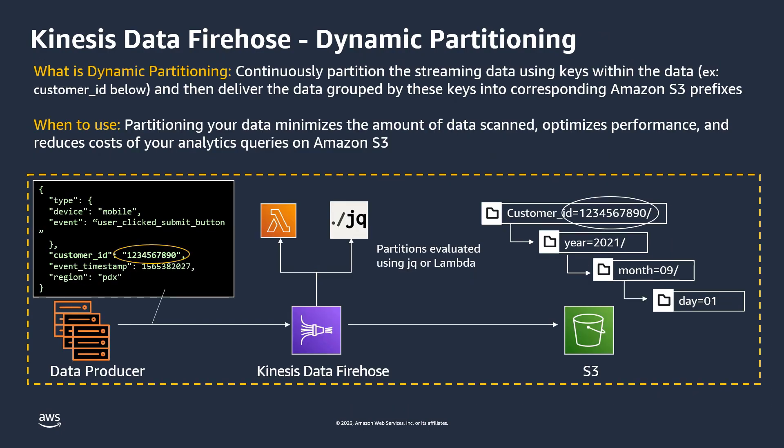Kinesis Data Firehose also supports dynamic partitioning. This enables you to continuously partition streaming data using keys within the data and then deliver the data grouped by these keys into corresponding Amazon S3 prefixes. In this example, the user has partitioned the data based on customer ID, year, month, and day. The data is delivered into specified Amazon S3 prefixes within the configured bucket. Partitioning your data minimizes the amount of data scanned, optimizes performance, and reduces costs of your analytics queries on Amazon S3.